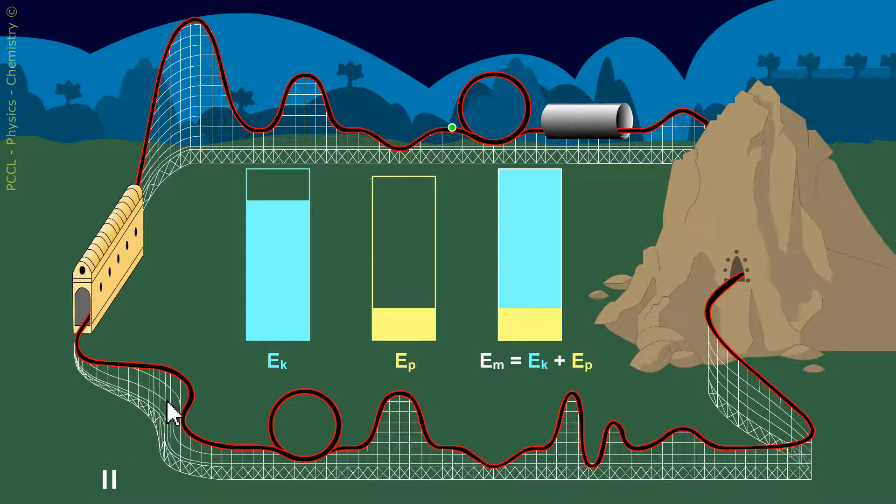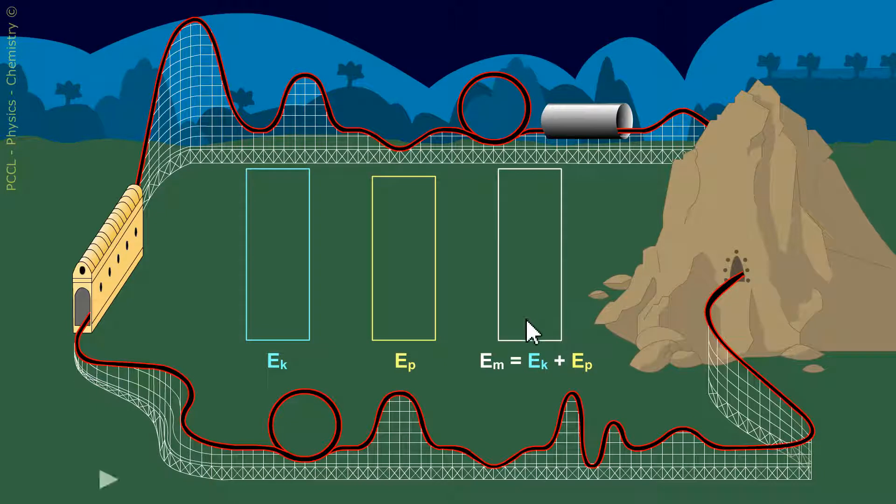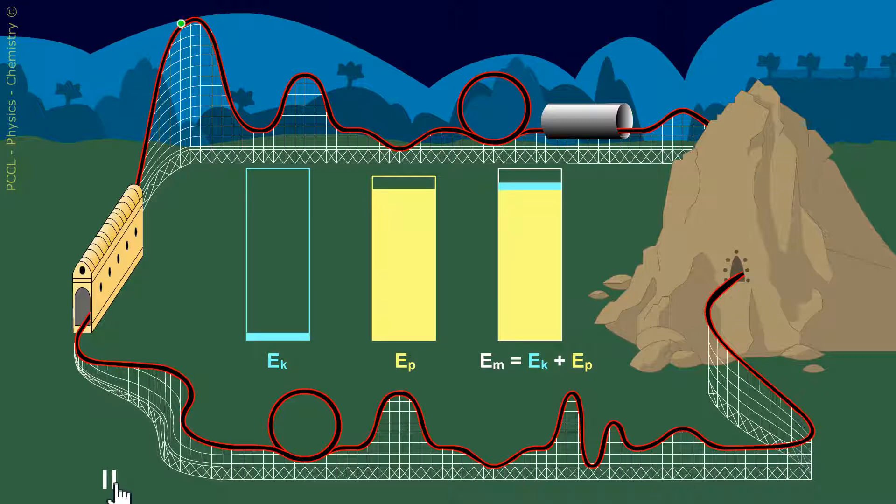Here is the lesson. Remember, the mechanical energy of a system which is subjected only to its own weight and to the reaction of the support is constant. Also retain, in the absence of friction. See at the end, the mechanical energy is not constant. It is dissipated in the form of thermal energy in the brakes. Same at the start, the mechanical energy is not constant since there is a force other than the weight which intervenes.